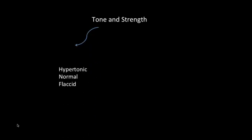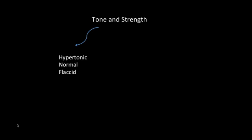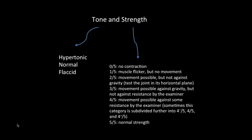Next we move on to the exam, which is very important in the neurologic system. We check the tone and strength of the patient. Hypertonicity is very common in upper motor neuron lesions, whereas the patient can also have hypotonicity — very low tone — which is common in lower motor neuron lesions. Strength is very important, so make sure you check the strength of the muscle or area of the body where the patient is complaining about weakness.